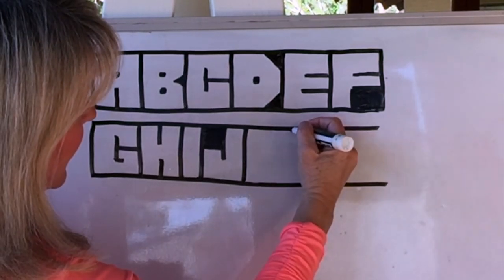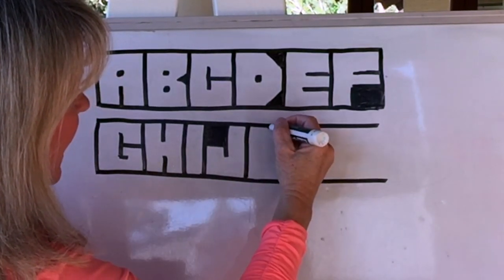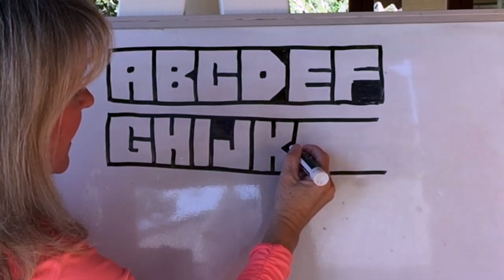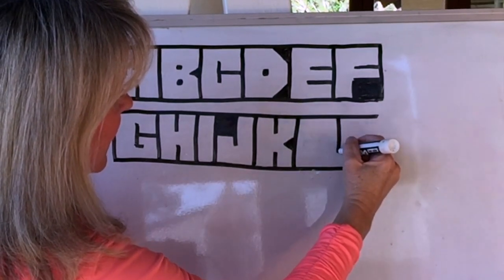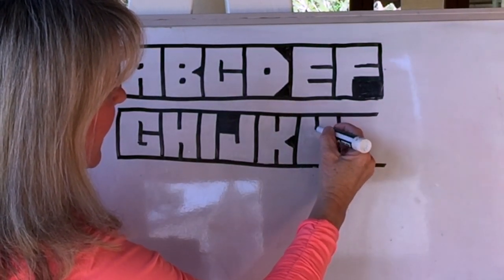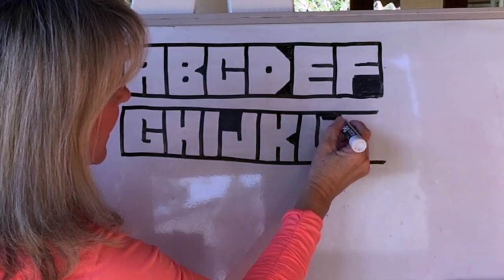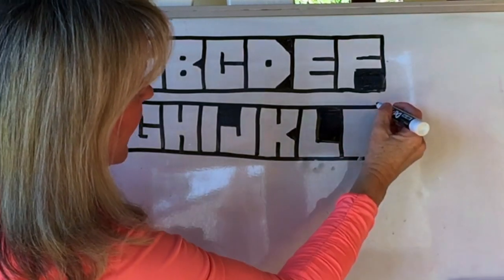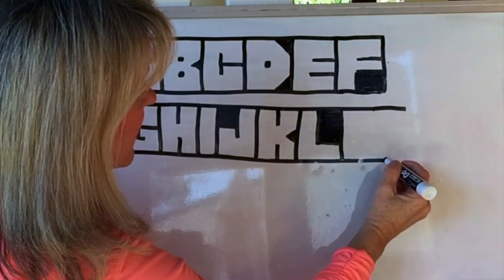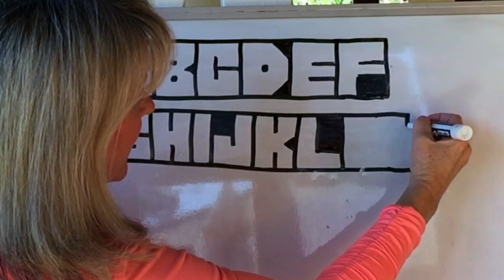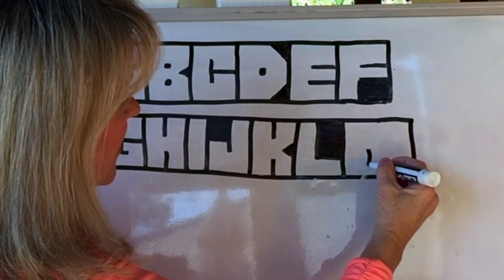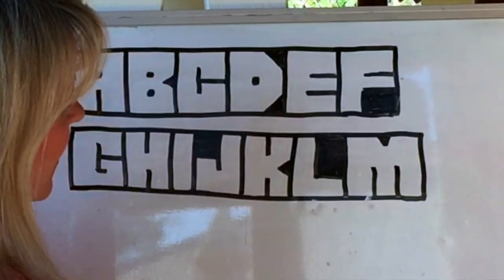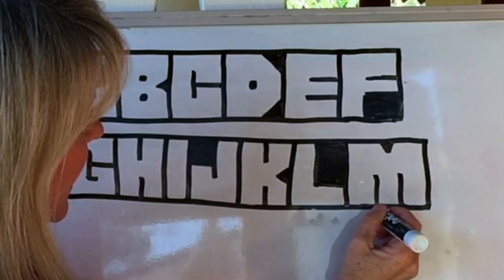K starts off just like an H, two lines and then you just do the triangle on the side. And then an L is a line down and then a line across and then you color in the side. And then an M, you have to make the box a little bit wider for an M and then you can just do two lines like this. I like to do a little triangle right there. So there's your M.